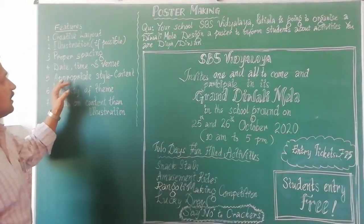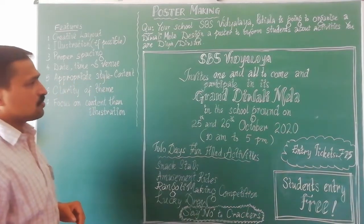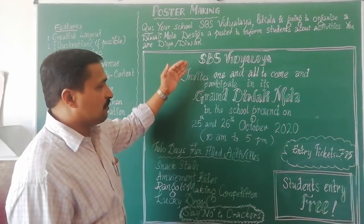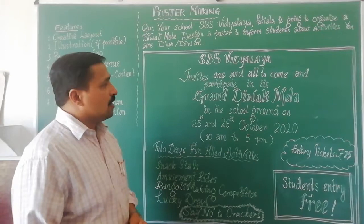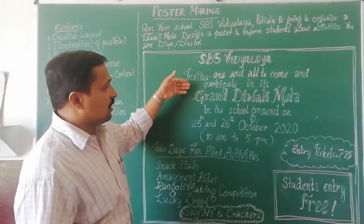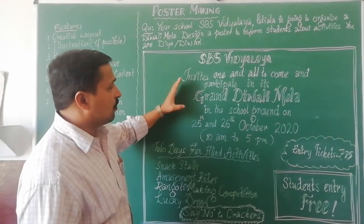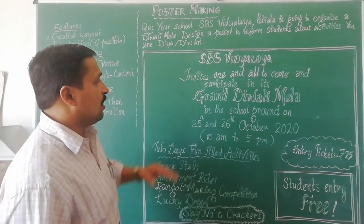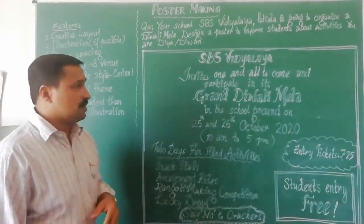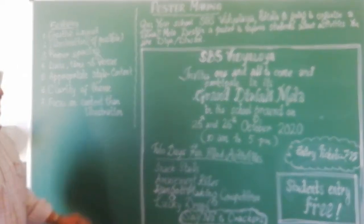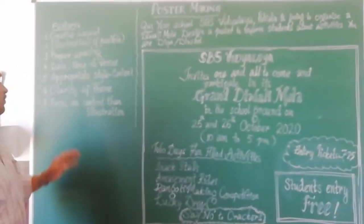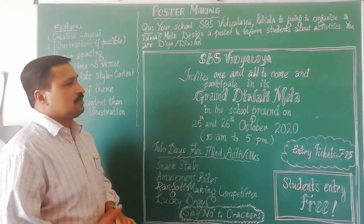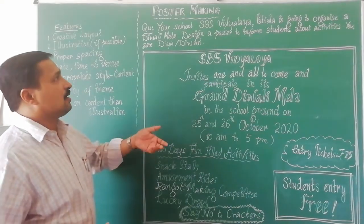The next feature is an appropriate style of content. Content can be presented with a proper style — for example, it can be given in the form of an invitation. Even though it's a poster, the ideas described should be given with a clear focus. Next is clarity of the theme — the theme should be made clear. Focus on the content rather than illustration. It's better to concentrate on the content than on illustrating.